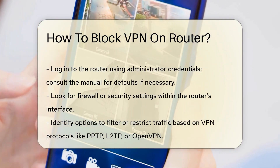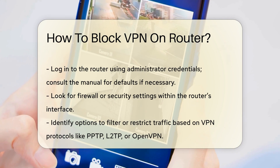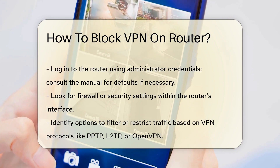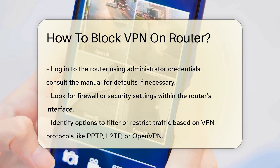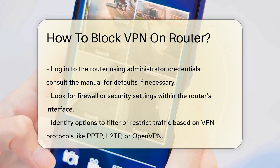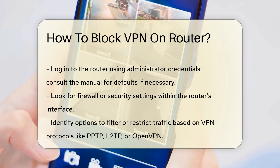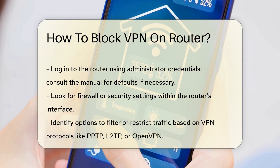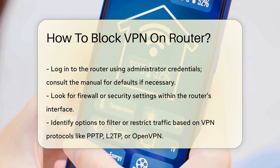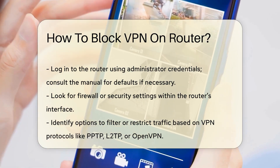Once logged in, look for options related to firewall or security settings. Many routers offer features to block specific types of traffic. Identify the settings that allow you to filter or restrict traffic based on protocols commonly used by VPNs, such as PPTP, L2TP, or OpenVPN.